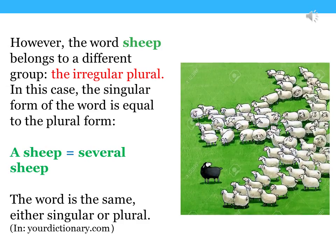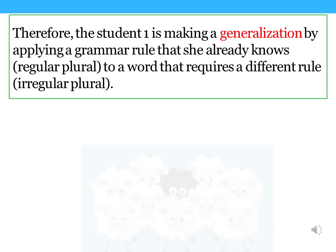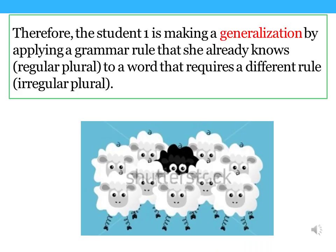However, the word 'sheeps' belongs to a different group: the irregular plural. In this case, the singular form of the word is equal to the plural form. The word is the same, either singular or plural. Therefore, student one is making a generalization by applying a grammar rule that she already knows to a word that requires a different rule.